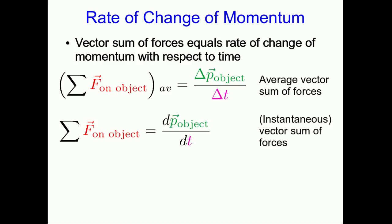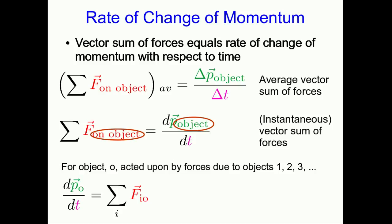That, by definition, is the time derivative of the momentum of the object. Notice that I'm stressing that this is the vector sum of a bunch of forces, all the forces, on one object, and it equals the time rate of change of the momentum of that object. For some object O being acted upon by forces due to a bunch of different objects, one, two, three, and so on, we can write it in a summation notation like this.